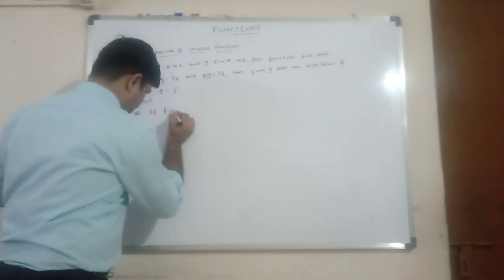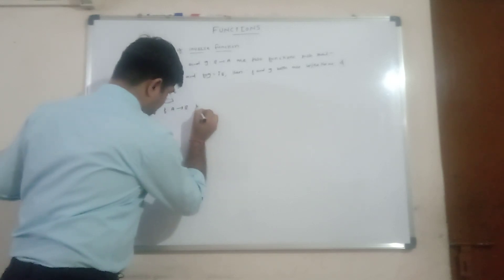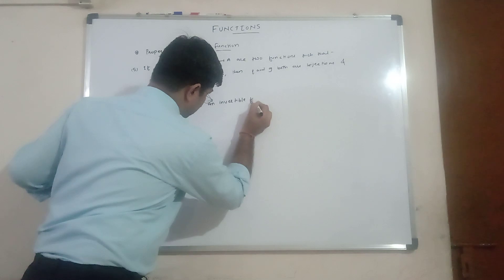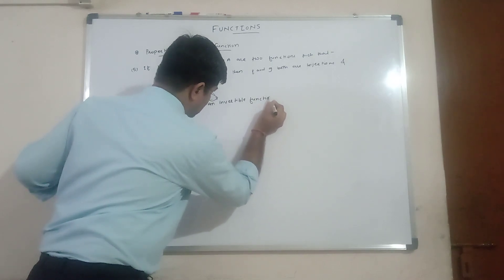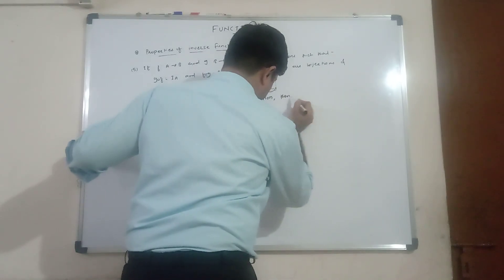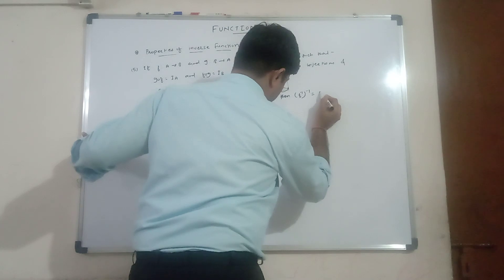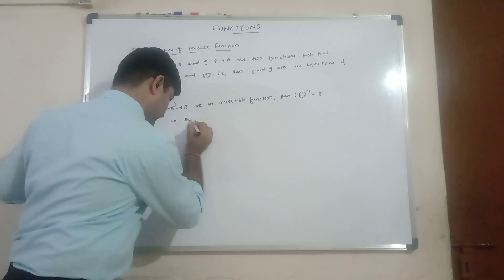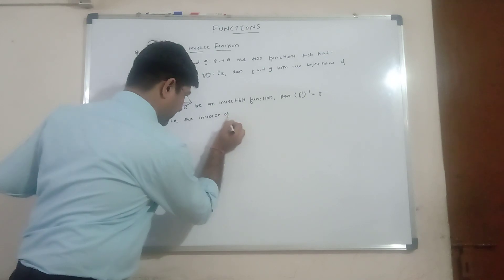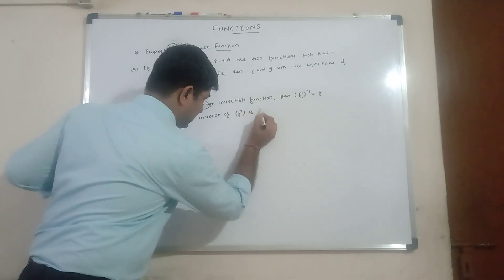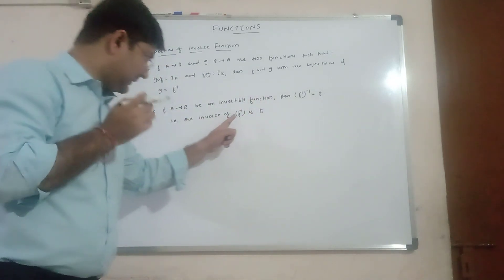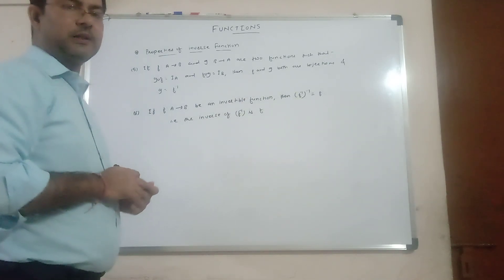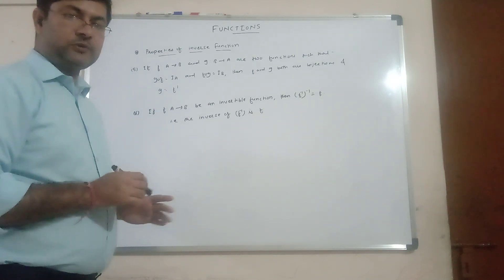Property 6: let f from set A to set B be an invertible function. Then (f⁻¹)⁻¹ = f. This means the inverse of f inverse is f itself — if you find the inverse of f inverse, you get the original function f. These are the six properties you must remember.